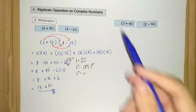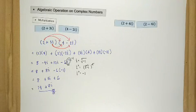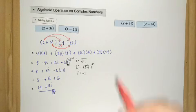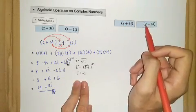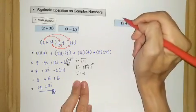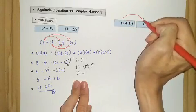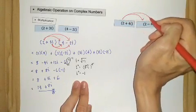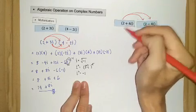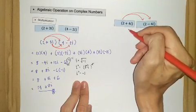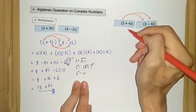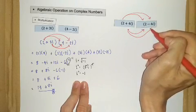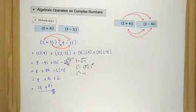Now for the second example, the same distributive law of multiplication is applied. The first term is 2 times 2, then 2 times negative 4i, then 4i times 2, and finally 4i times negative 4i.